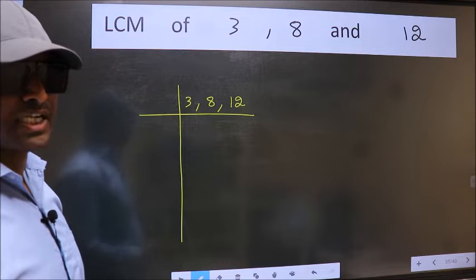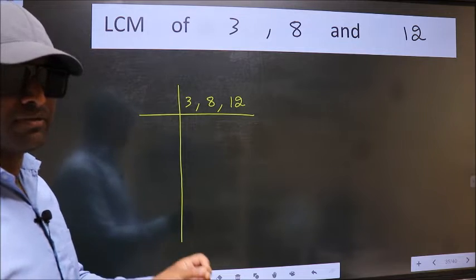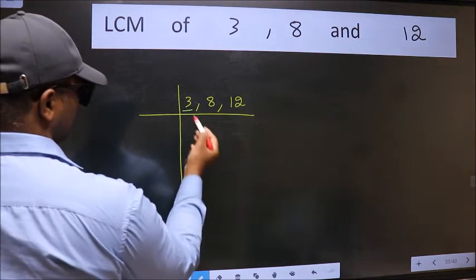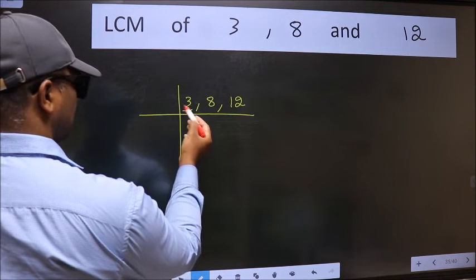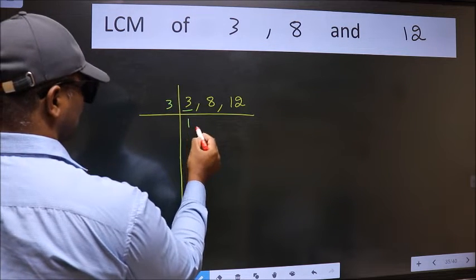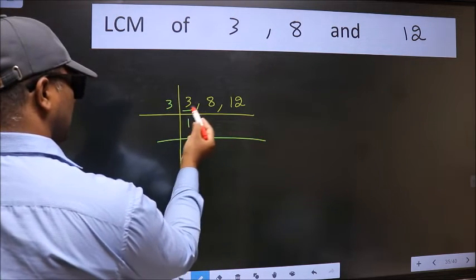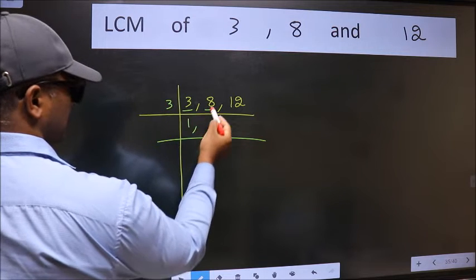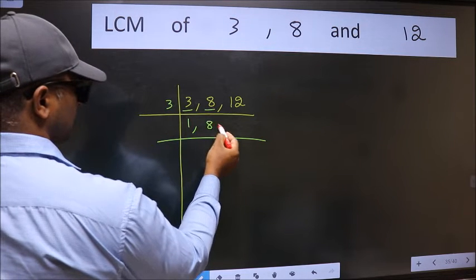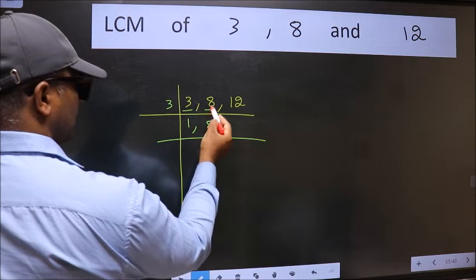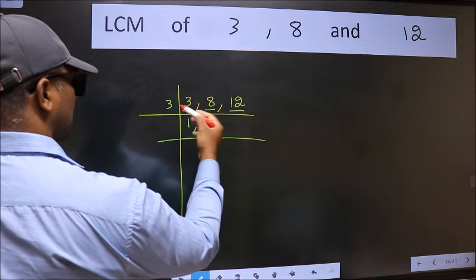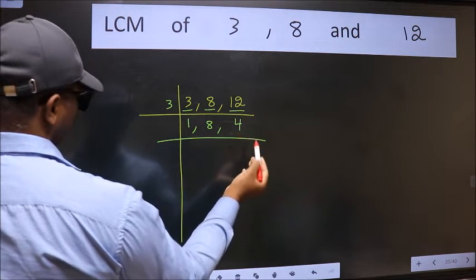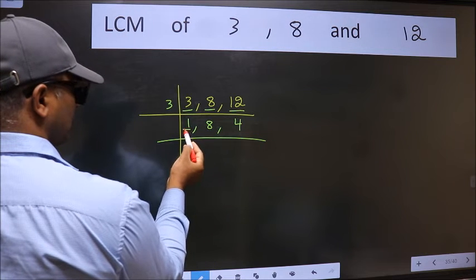Now we should focus on the first number, which is 3. 3 is a prime number, so 3 wants 3. The other number 8 is not divisible by 3, so we write it down as it is. The other number 12 — when do we get 12 in the 3 table? 3 fours are 12. Now we got 1 here.